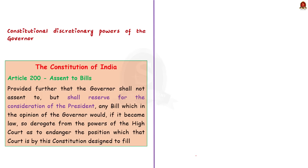As per Article 200, the governor in some cases can reserve a state bill for the consideration of the president — this happens when the governor is of the opinion that a particular bill is derogating the powers of the High Court or endangers the constitutional position of the High Court. For this action, the governor is not bound to act on the recommendation of the Council of Ministers. It is the discretionary power of the governor to decide upon reserving a bill for the president's consideration.